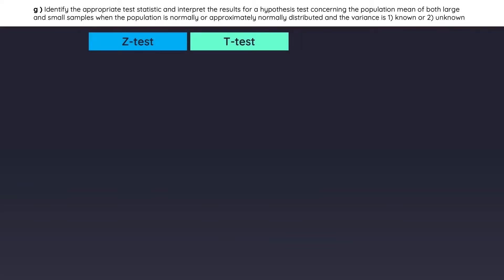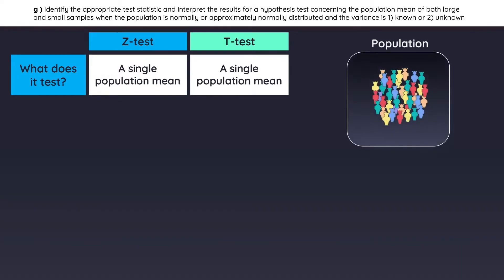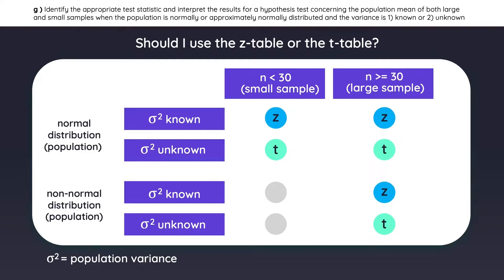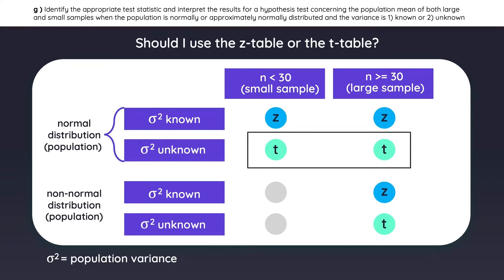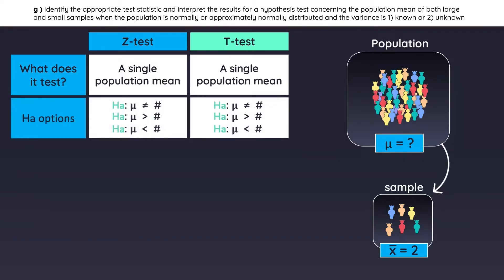The z-test and the t-test are both used to test an analyst's forecasts about a population's mean. Here we have a single population, and we will take a sample to help us forecast the population mean. But how do you know when to use the z-test or the t-test? Here is the table we talked about in the reading titled Sampling and Estimation. For example, if the population is normally distributed but you do not know its variance, you use the t-table to test the hypothesis. The alternative hypothesis will be written as one of three options: the analyst estimates that the population mean is equal to, greater than, or less than a given value.